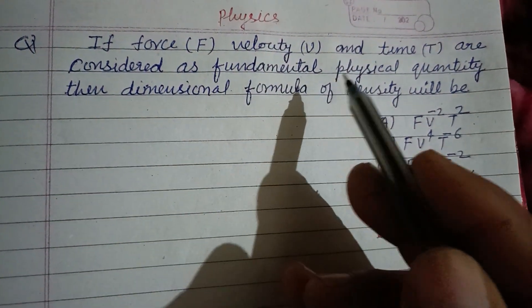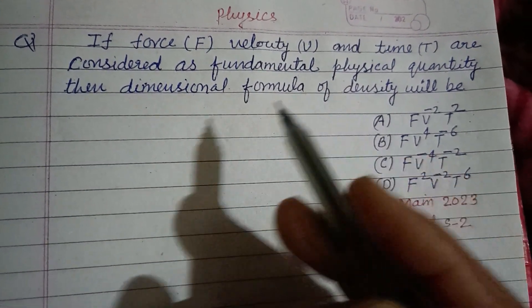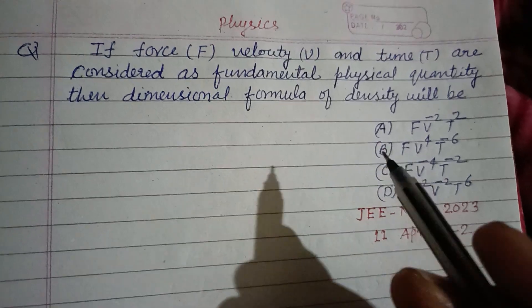If force F, velocity V, and time T are considered as fundamental physical quantities, the dimensional formula of density will be.